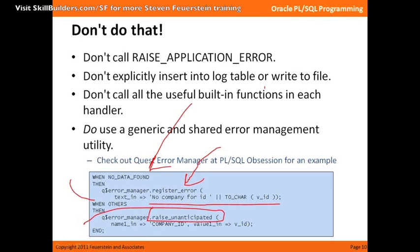If anything else goes wrong, raise an unanticipated error, pass in the company ID as part of a name-value sequence so I can record those values and look at them later to try to support and recover from the error. But notice all the detail code is gone.